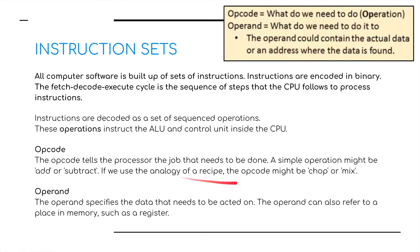The opcode tells the processor the job that needs to be done — a simple operation might be add or subtract. Using the analogy of a recipe, the opcode might be 'chop' or 'mix'. The operand specifies the data that needs to be acted upon; the operand can also refer to the place in memory, such as the register. So: what is the data and what needs to be done to the data? The operand could contain the actual data or an address where the data is found. Opcodes and operands are part of instruction sets in a CPU.